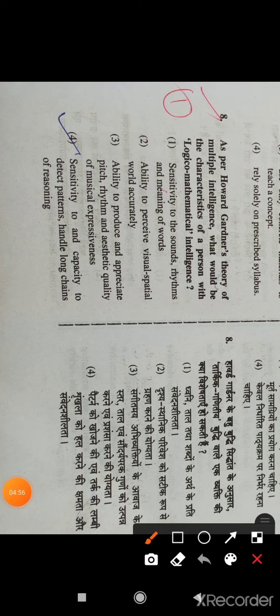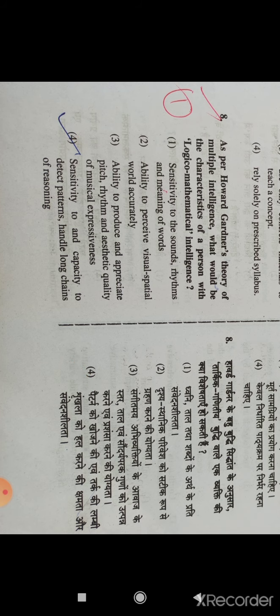Question 8: As per Howard Gardner's theory of multiple intelligence, what would be the characteristics of a person with logical mathematical intelligence? Option number 4: sensitivity to and capacity to detect patterns, handle long chains of reasoning.